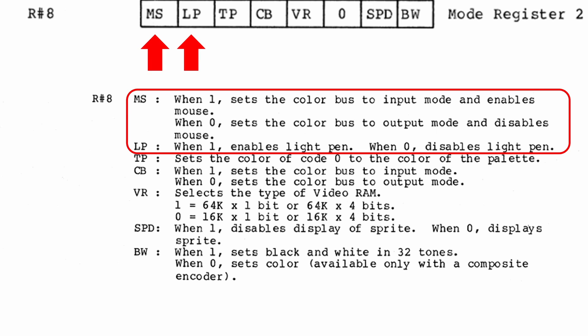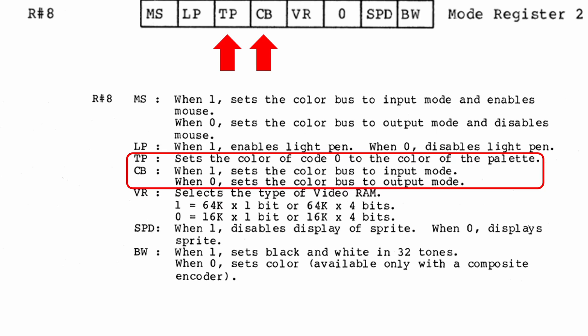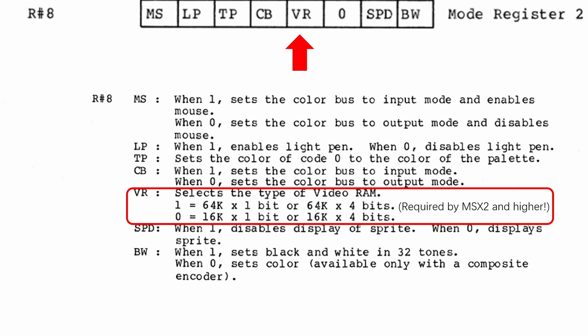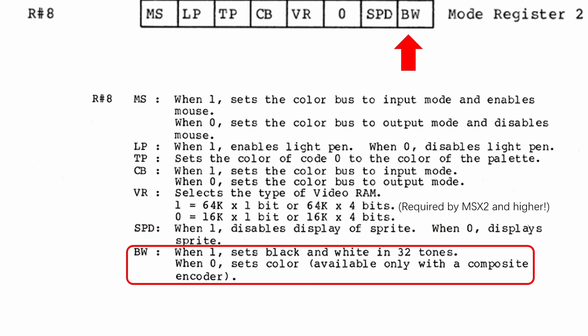The top two bits are for the mouse and light frame functionality, which nobody uses, and are subsequently deleted from the V9958. The next two bits are transparency and color bus, used to superimpose other video signals with the output of the VDP and digitize a video signal. Again, these bits saw little use outside of some professional equipment. The next one is video RAM select, which must be set on as all MSX2 and higher have 64K or more VRAM. The last bit is black and white, which is probably used to enhance clarity of high-resolution video on monochrome monitors. It may be helpful for some word processing applications, but as no one is writing a graduate thesis on the MSX, we can also ignore this bit.